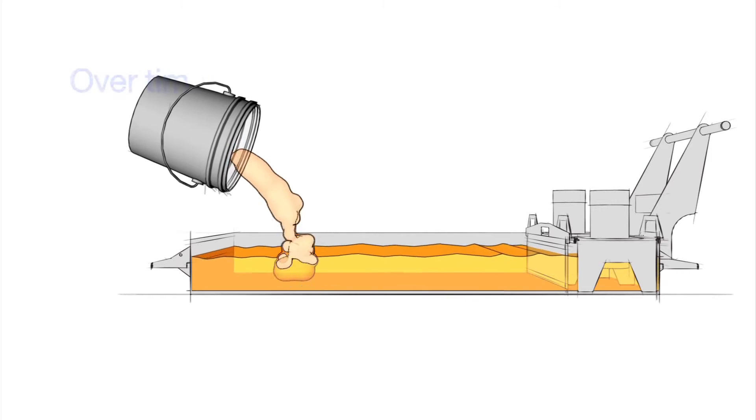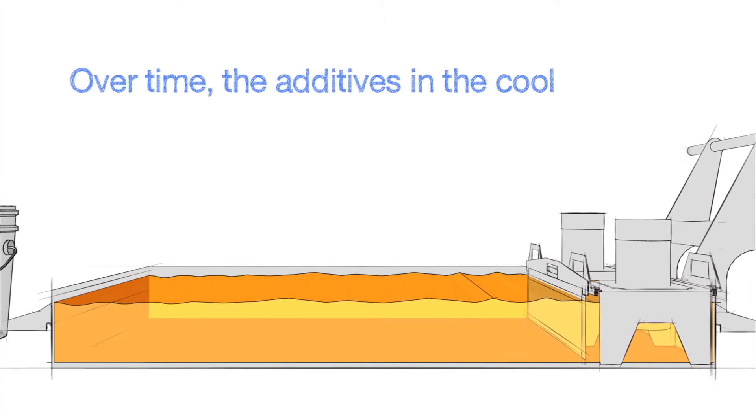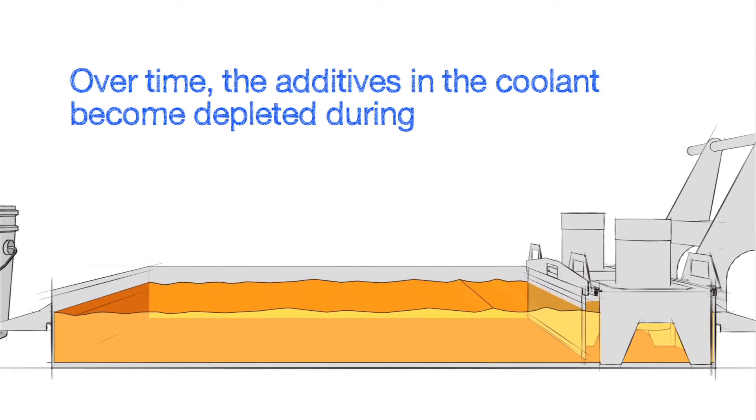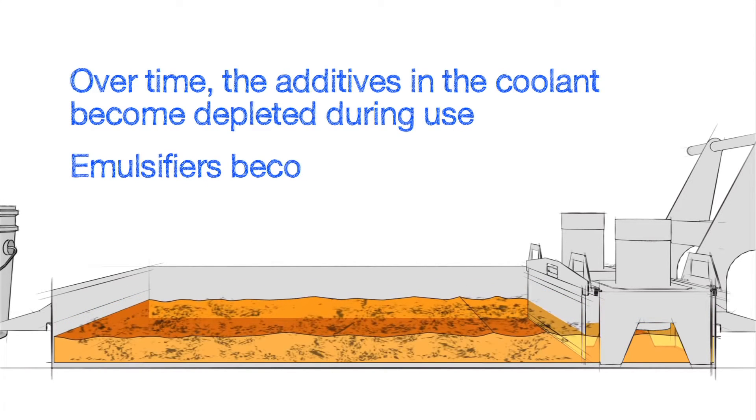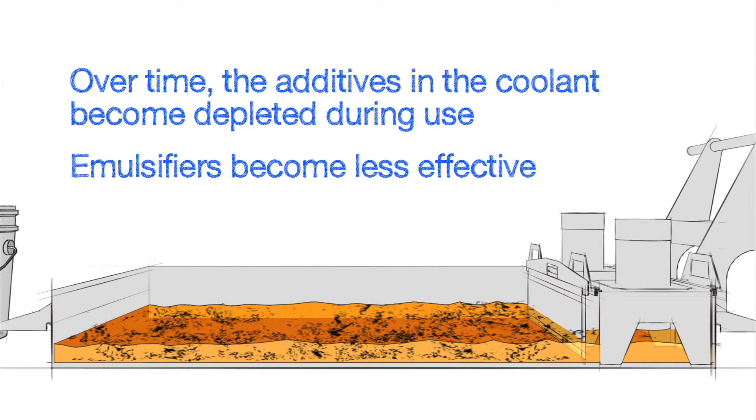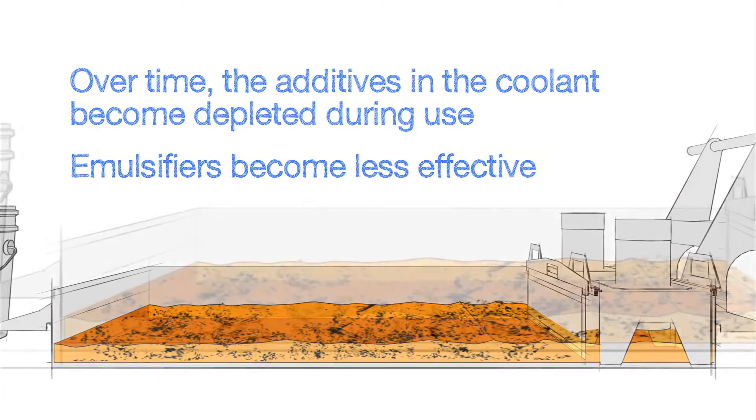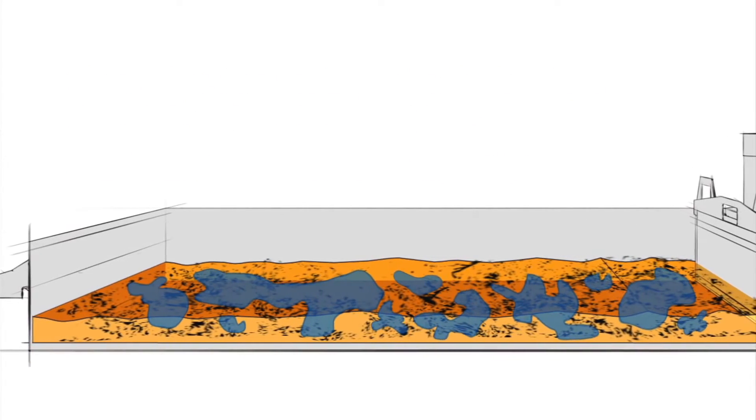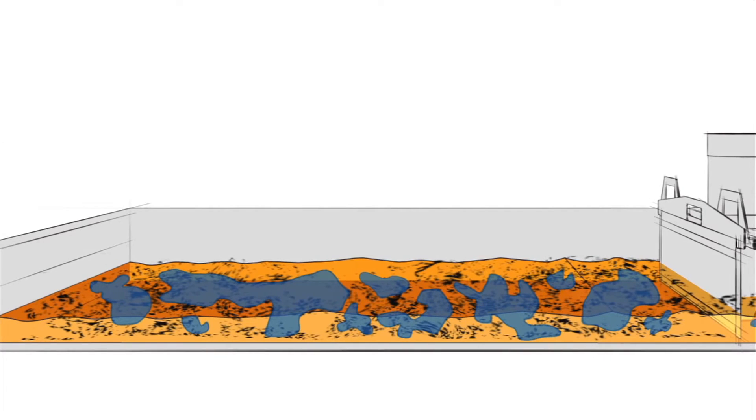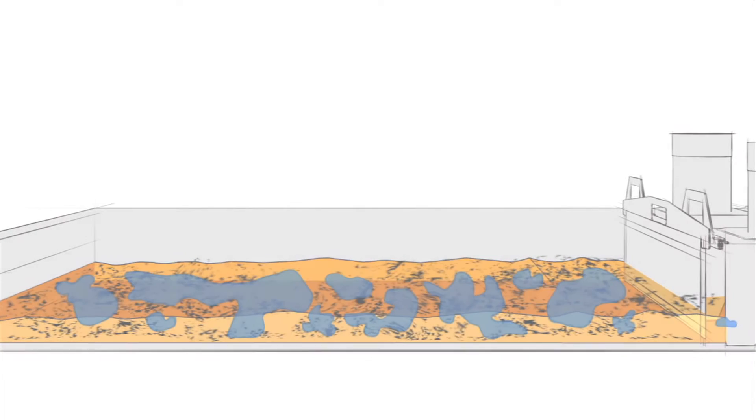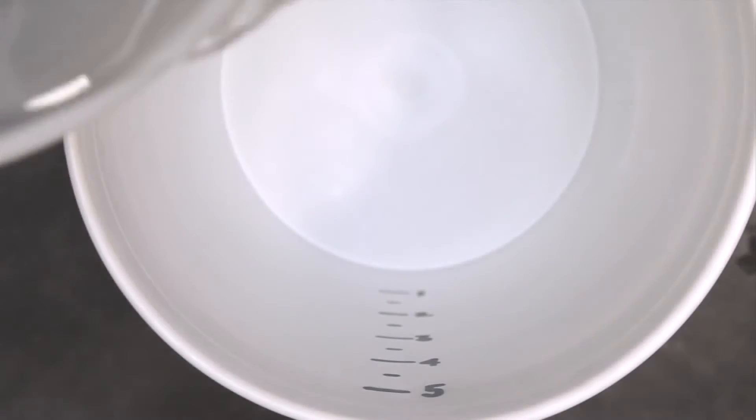The problem is that over time, the additives in the coolant become depleted during use, resulting in emulsifiers that are less effective. Meanwhile, tramp oil and dirt are accumulating, making it difficult for water to mix in correctly. Topping off with 1% buckets instead of plain water helps everything mix together completely. So now that we know why we need these 1% buckets, we'll start making our top-up coolant using 5 gallons of deionized water.